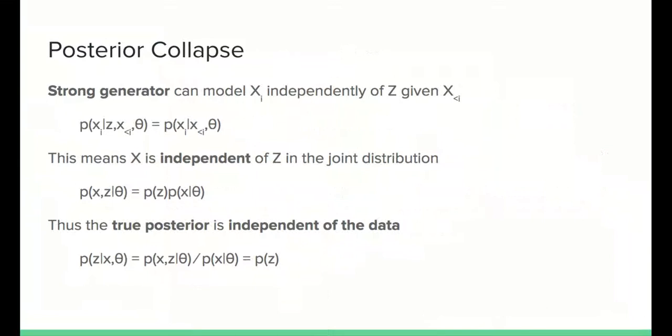Some might think that posterior collapse is some sort of curse introduced by variational inference, but that's not the whole story. If you adopt a probabilistic modeling framework, then models should express preferences for certain types of solutions already in their own statistical design. And this one here simply does not.